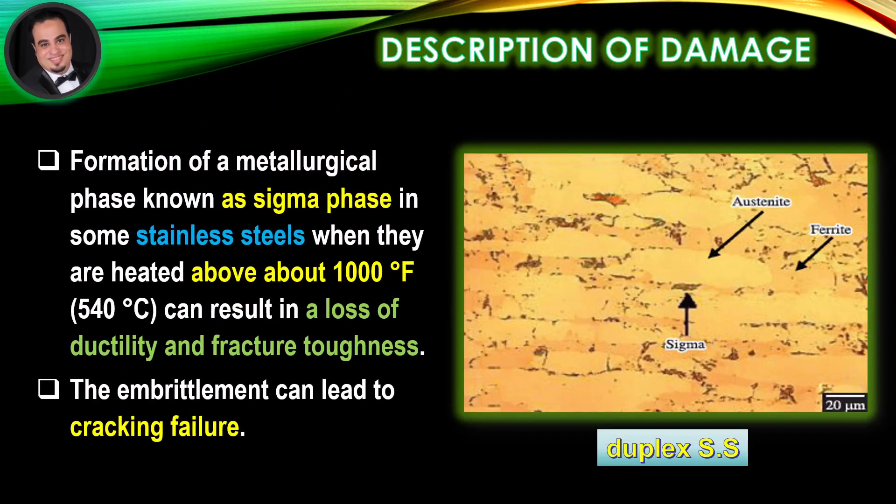Description of damage. Formation of a metallurgical phase known as sigma phase in some stainless steels, when they are heated above about 1000 degrees Fahrenheit, can result in a loss of ductility and fracture toughness. An example of sigma phase in duplex stainless steels is illustrated in the figure. The embrittlement can lead to cracking failure.